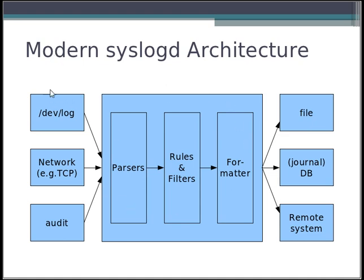The input side obviously receives input messages and does so via various channels. For example, on Linux, we have DevLog as a primary channel for local emitted messages. We have the network like TCP or UDP. And in the future in rsyslog, we'll also have audit — I'm right now working on that.